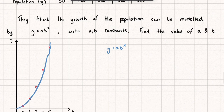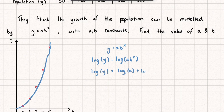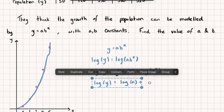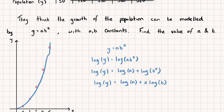We take logarithms base 10 of both sides to get log y = log(a × b^x). Using the rules of logarithms we rewrite the right-hand side as log a + log(b^x), then use the power rule to bring the x to the front: log y = log a + x × log b. Rewriting in a clearer order: log y = (log b) × x + log a.